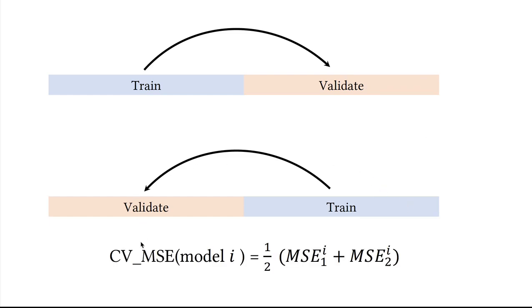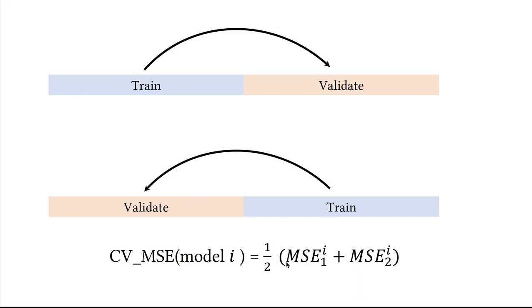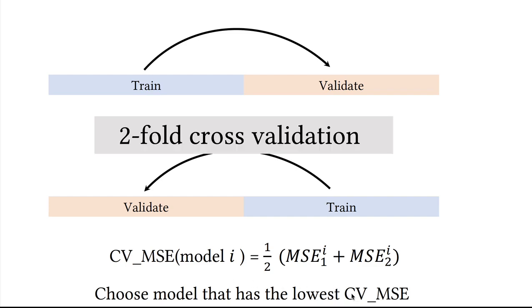And then just take the average of the mean squared errors of a model i, how it performs on the validation set while trained on the first half, plus the mean squared errors on the validation set of the first half of the data. We will use this cross-validation technique to choose the model that has the lowest cross-validation mean squared errors in the setting.